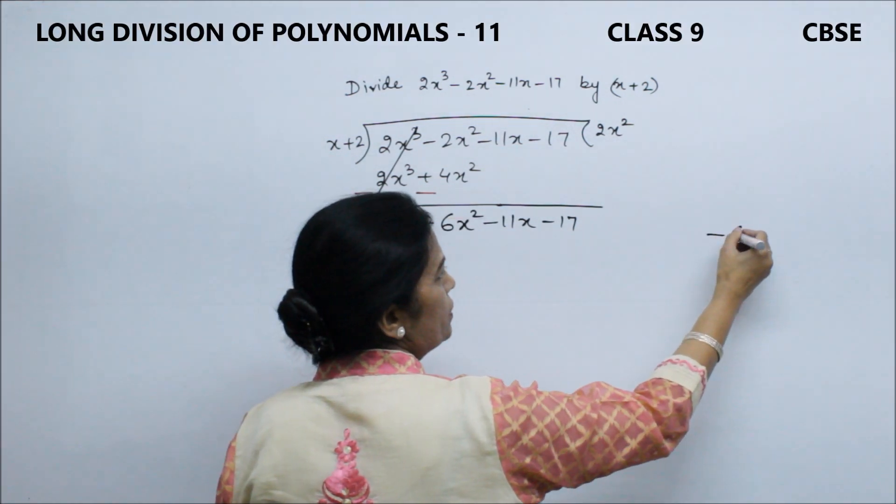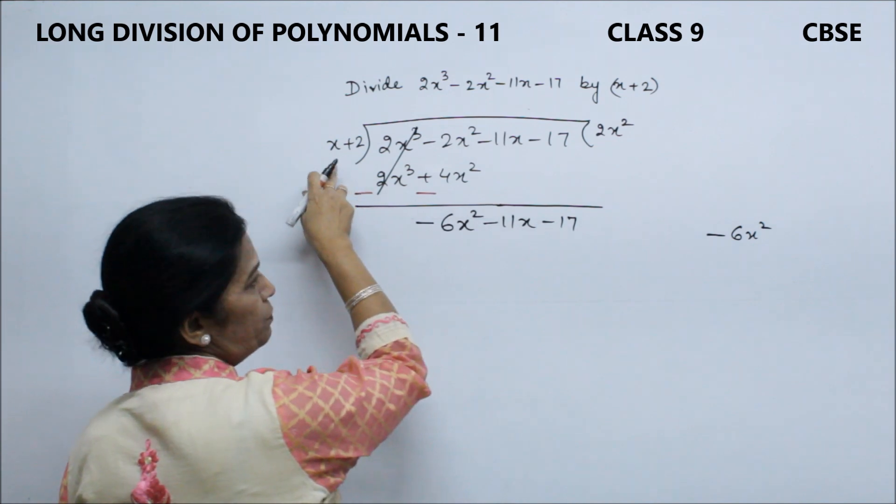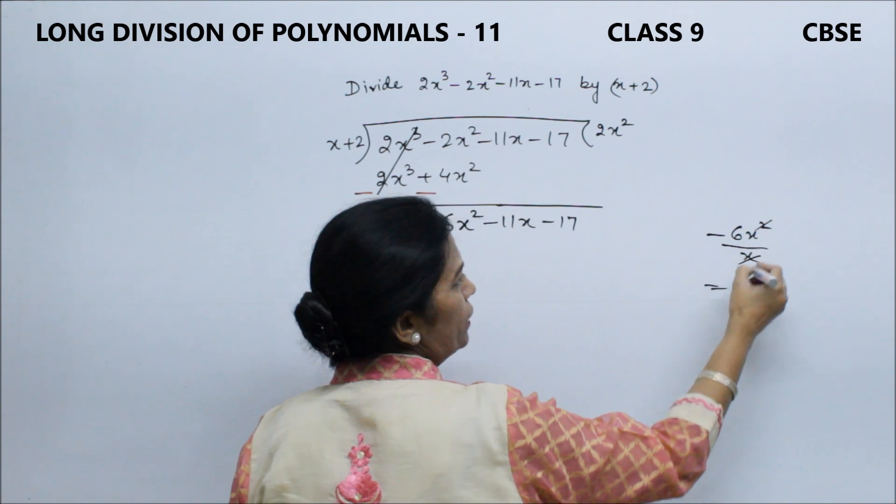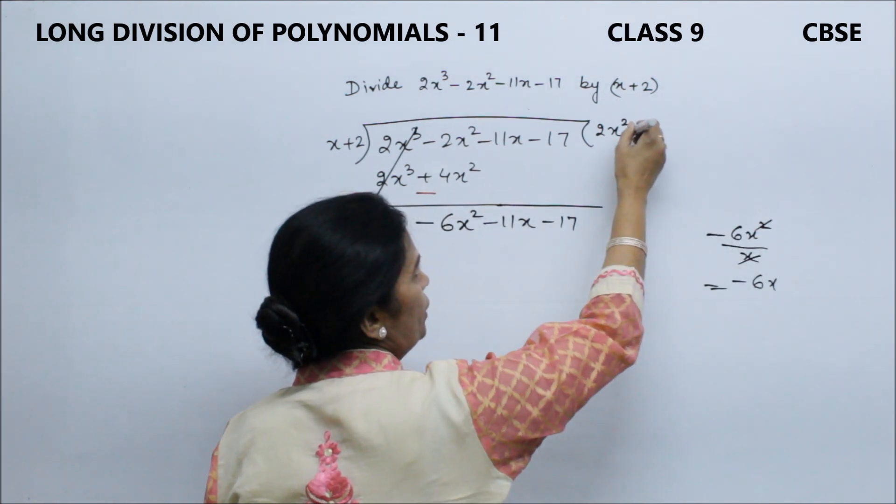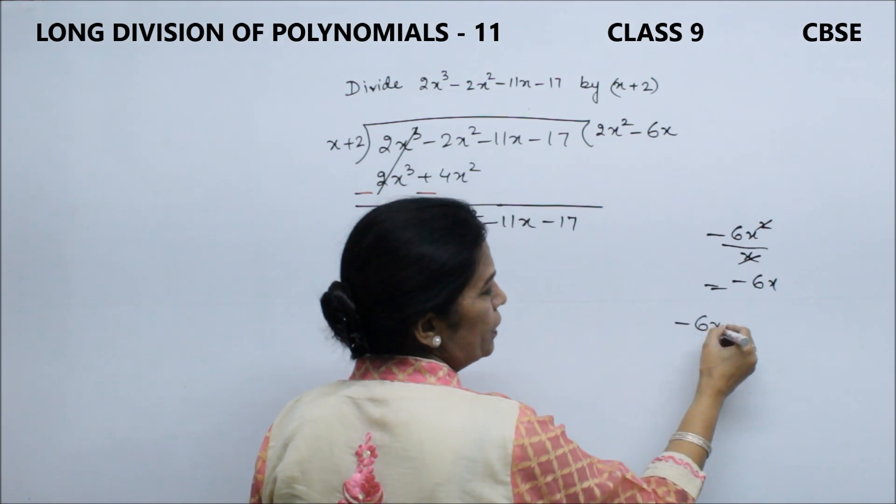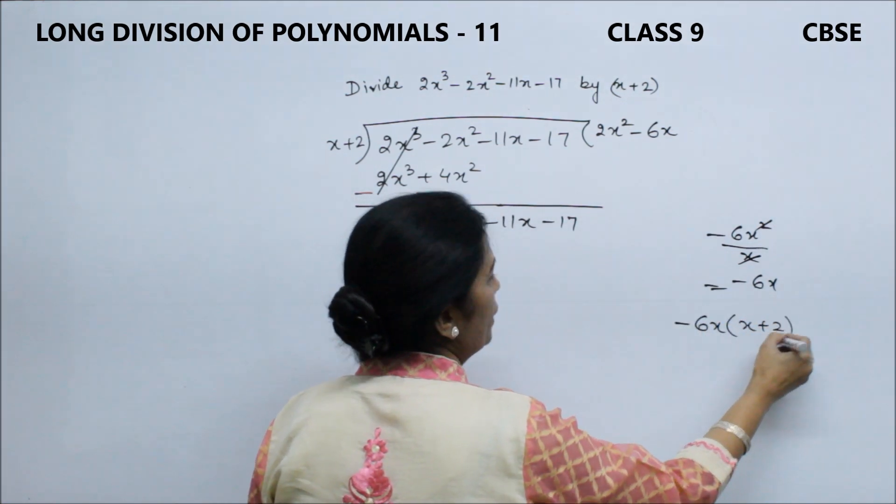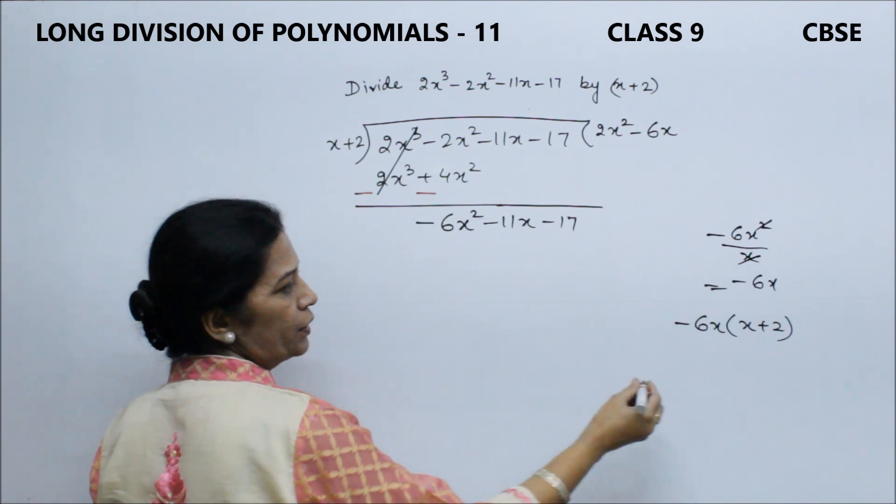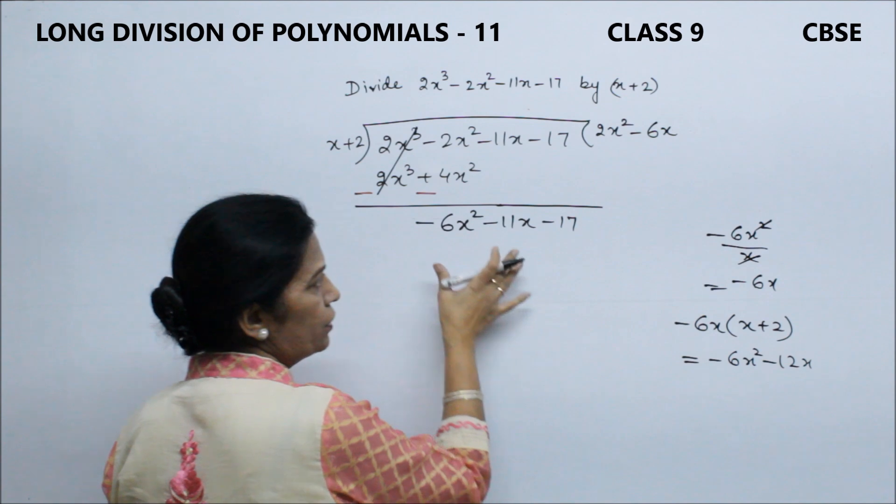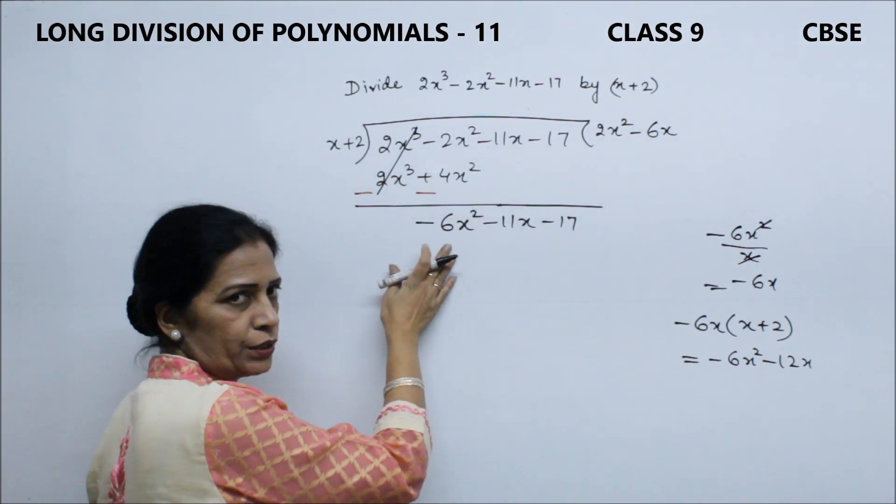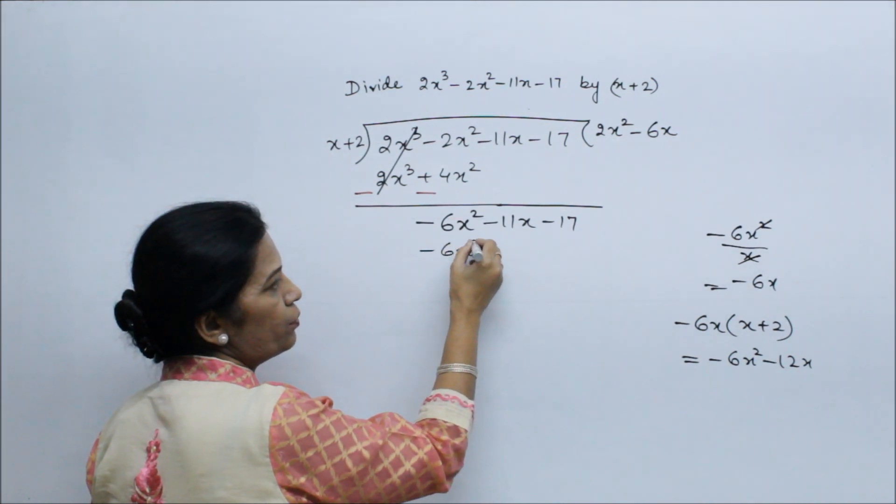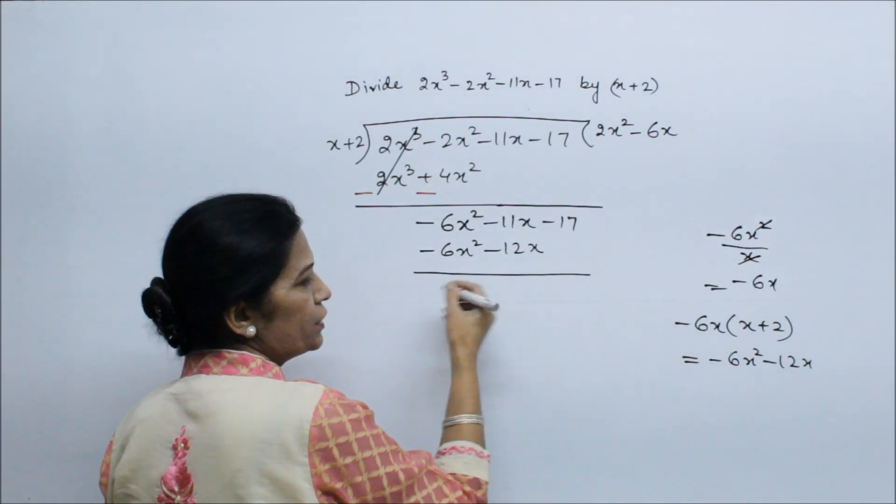This -6x² divided by x, how much answer? It is -6x. So this is our next term, -6x. This -6x multiply by x + 2, so the answer is -6x² - 12x. These terms we will write down, x² term and x term. So here we have -6x² and -12x.